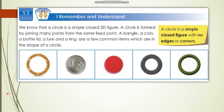Now we are moving to the circle. A circle is a simple closed two-dimensional figure. A circle is formed by joining many points from the same fixed point. A bangle, a coin, a bottle, a tire, and a ring are a few common items which are in the shape of a circle. A circle has no edges and no corners.